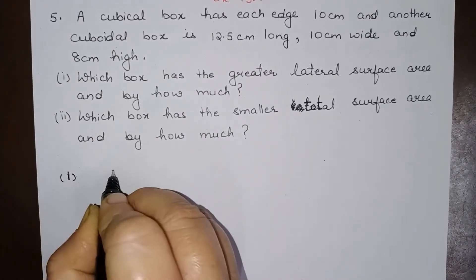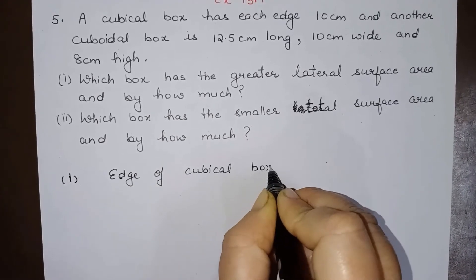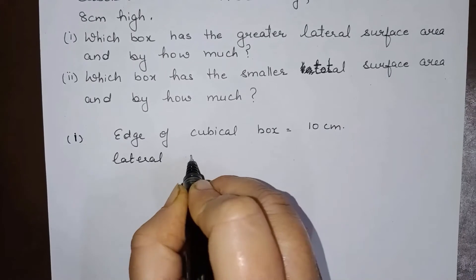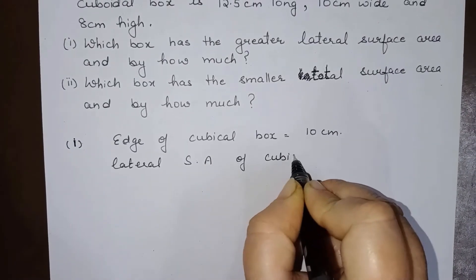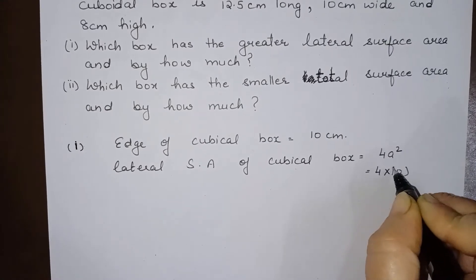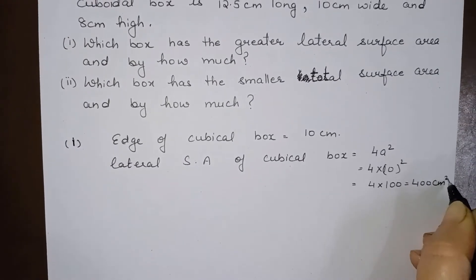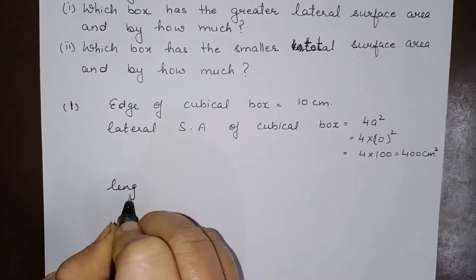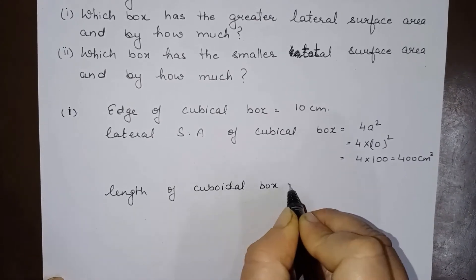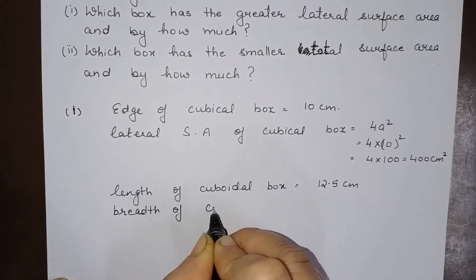The edge of the cubical box is 10 centimeter. The lateral surface area of the cubical box is given by 4a², where a is the edge. So this is 4 into 10², which is 4 into 100, giving 400 centimeter square. Now, the length of the cuboidal box is 12.5 centimeter.